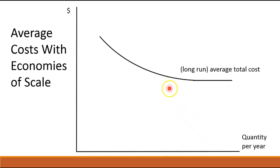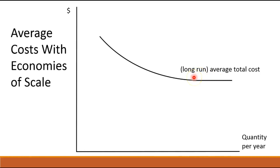You'll notice that I've drawn this so that that decline in average costs stops at some point, and average costs become constant. That doesn't have to be the case, but very often the argument is made that there's some evidence that economies of scale eventually end at some point, and the firm's average costs could simply remain constant instead of declining. I've also labeled average cost as long-run average cost, and that phrase simply means that the firm has enough time to adjust the way in which it's producing its good or service so that it can produce at the lowest possible cost.